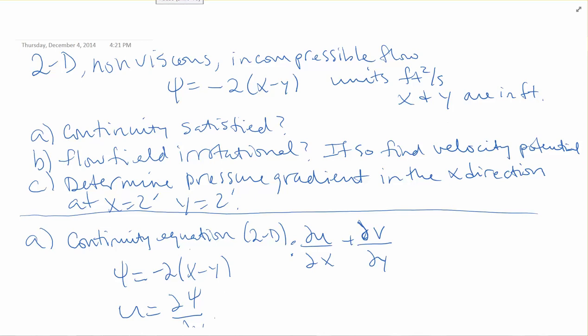We have a 2D non-viscous incompressible flow problem. We are given the stream function, which is equal to negative 2 times x minus y. We're dealing with English units, so we have feet squared per second. x and y are coordinates, also in feet.